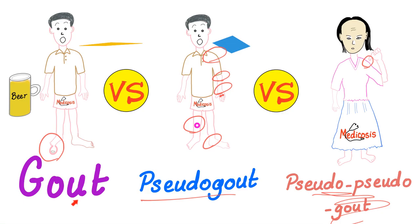What crystals do you see in gout? They are called monosodium urate crystals. Pseudogout? Calcium pyrophosphate dihydrate crystals. Pseudo-pseudogout? Hydroxyapatite crystals, or basic calcium phosphate to be more specific. Gouty crystals are negatively birefringent — yellow when parallel. Pseudogouty crystals are positively birefringent — blue when parallel. Hydroxyapatite arthropathy crystals are non-birefringent.